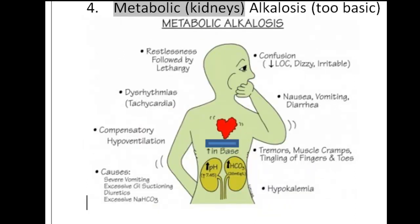The fourth abnormal condition is metabolic alkalosis. This is where the kidneys cause an increase in the bicarbonate ion. An increase in the bicarbonate ion, the base, causes a decrease in hydrogen ion concentration, which creates a basic or alkaline environment. Therefore, the pH will increase.